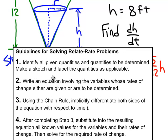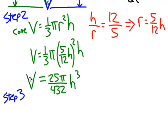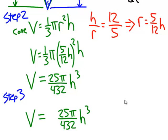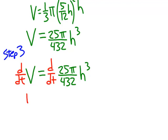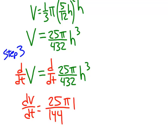Step three: use the chain rule to implicitly differentiate both sides of the equation from step two with respect to time. Differentiating both sides, on the left we get dV/dt. Dividing the bottom by 3 instead of multiplying the top, we get 25 over 144. So dV/dt equals 25π/144 times h squared times dh/dt. That is step three.